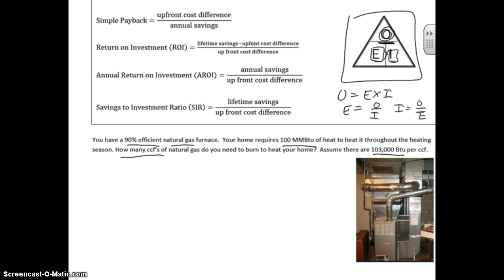We know this is our output here. We know our efficiency, so we need to know our input. Let's write down what we know. Efficiency is 90%, output required is 100 mmBTU, and we need to know the input.